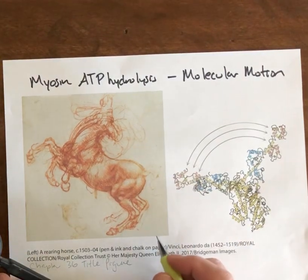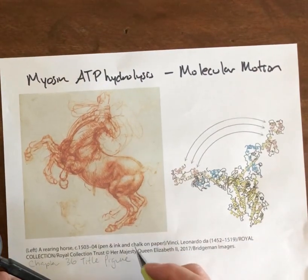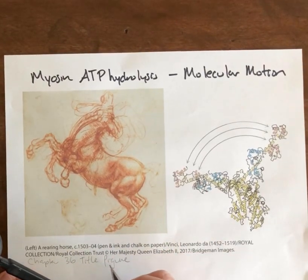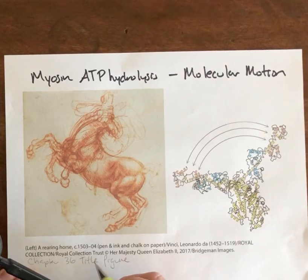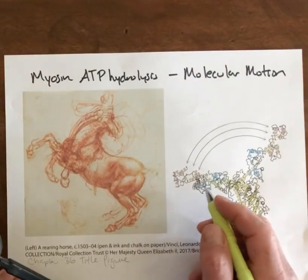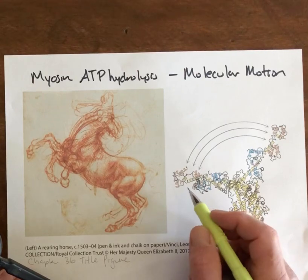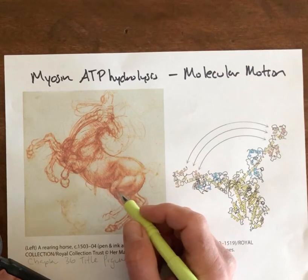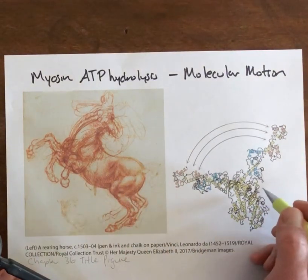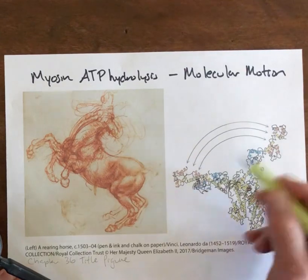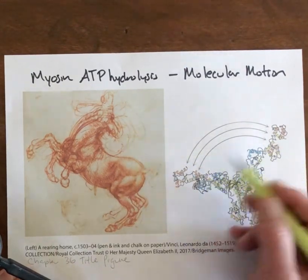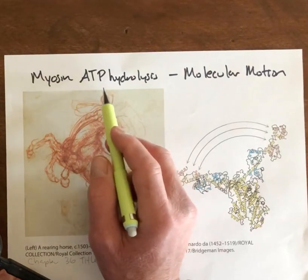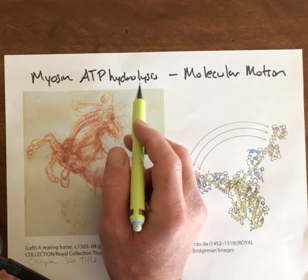In this video, I want to go over some of the figures from the text by way of guided reading. We're starting with the title figure for chapter 36, which shows a pen and ink drawing by Leonardo da Vinci. The athleticism we associate with muscle-driven motion is, at the molecular level, driven by moving parts in myosin. And those moving parts are somehow coupled to ATP hydrolysis.